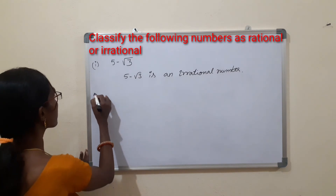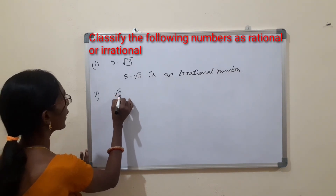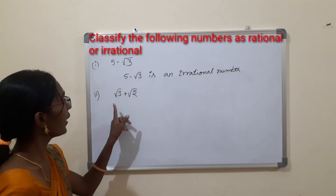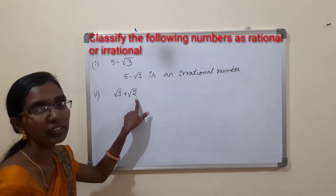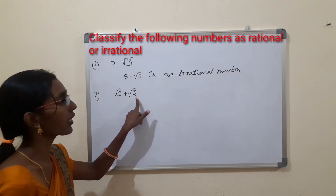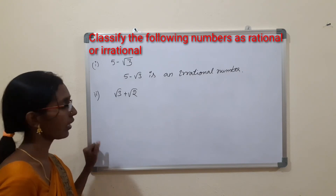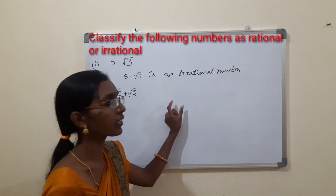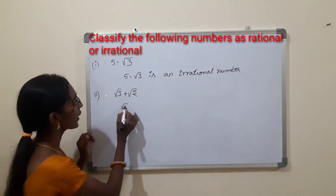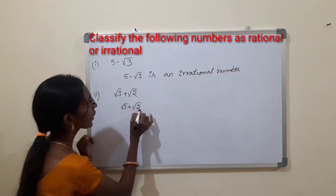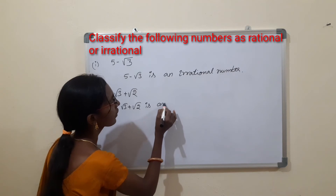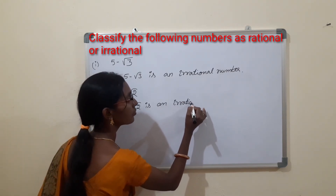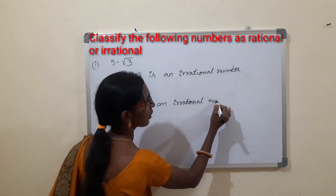The second one is √3 + √2. Adding two irrational numbers produces an irrational number only. Therefore √3 + √2 is also an irrational number.